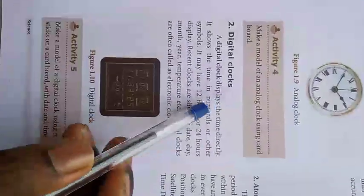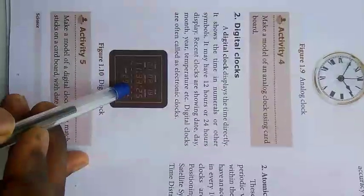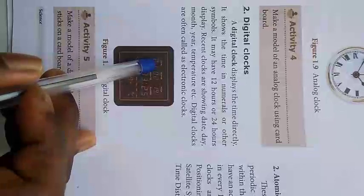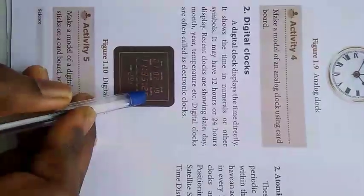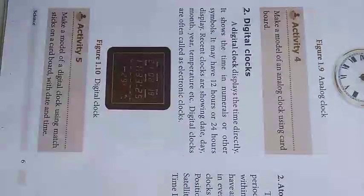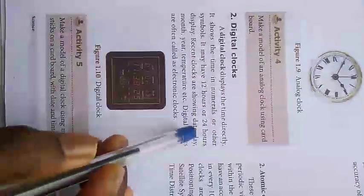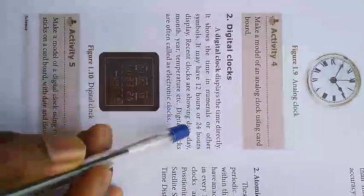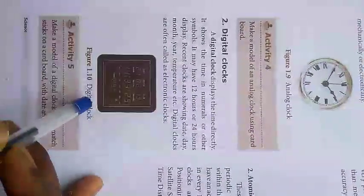Digital clocks display time directly in numerals — for example, showing 11 hours, 33 minutes, 25 seconds. Recent clocks also show date, day, month, year, and even temperature. Digital clocks are often used as electronic clocks.